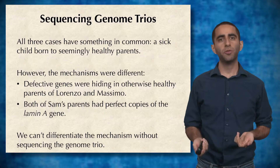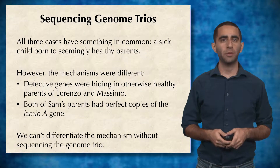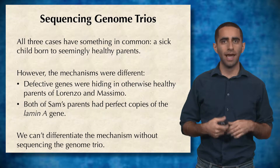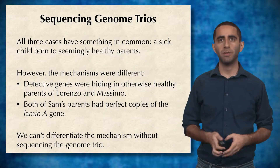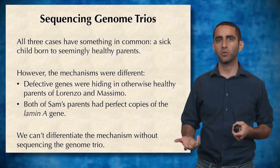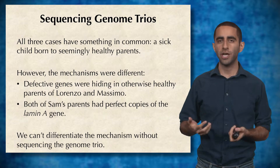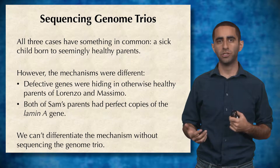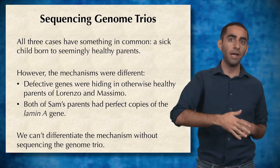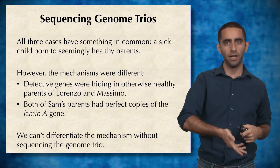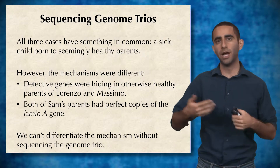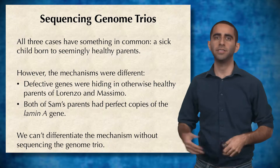So if you noticed, all three of these children that we discussed had something in common. We had three children who had a genetic disease in which both parents were seemingly healthy, but the child had the disease.